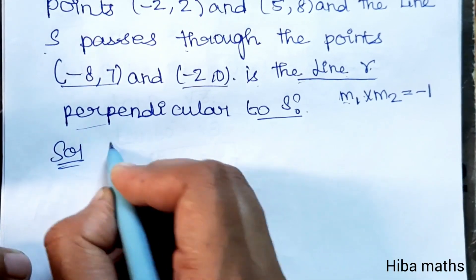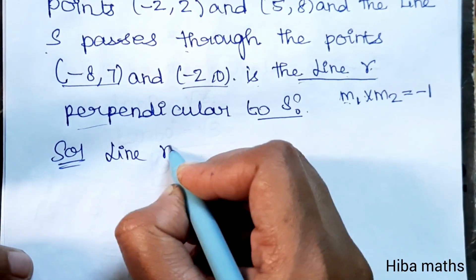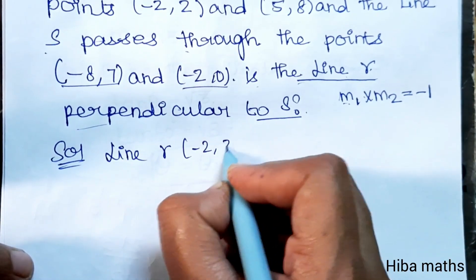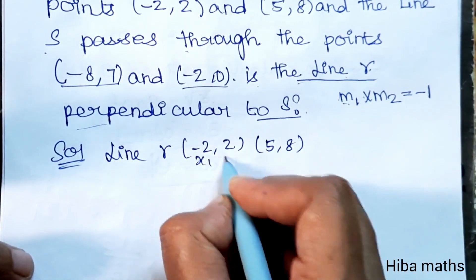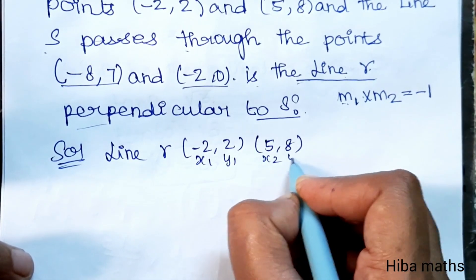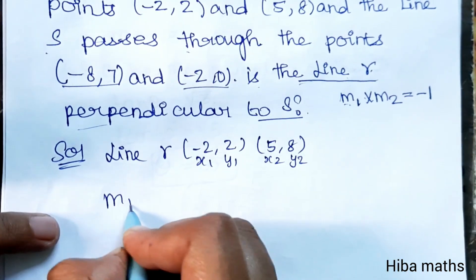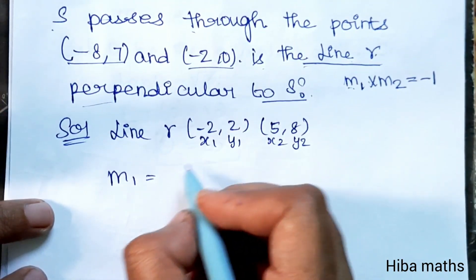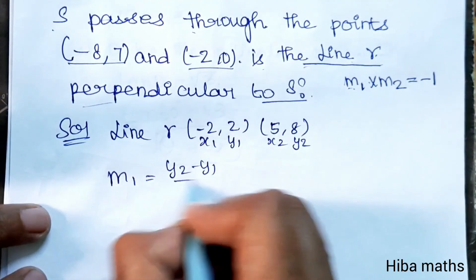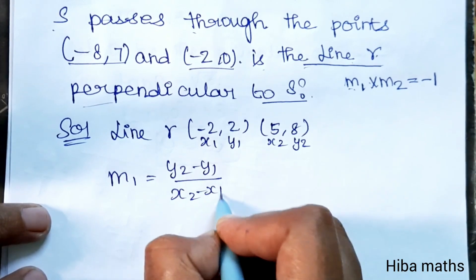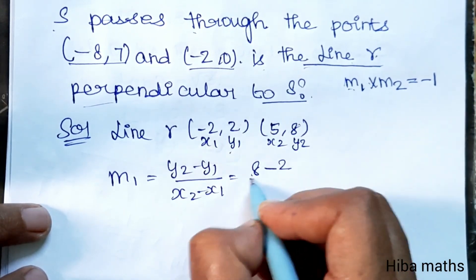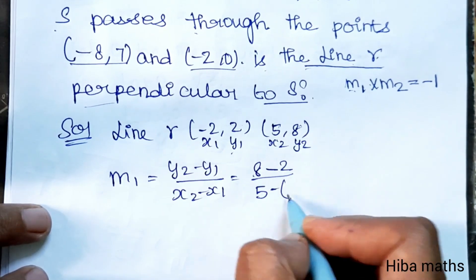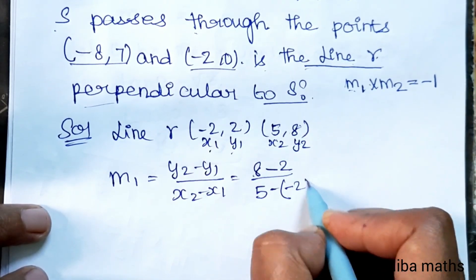Solution: Line R passes through the points (-2, 2) and (5, 8). Let x1, y1 be (-2, 2) and x2, y2 be (5, 8). Slope M1 equals y2 minus y1 divided by x2 minus x1. That's 8 minus 2 divided by 5 minus (-2), which equals 6 divided by 7.